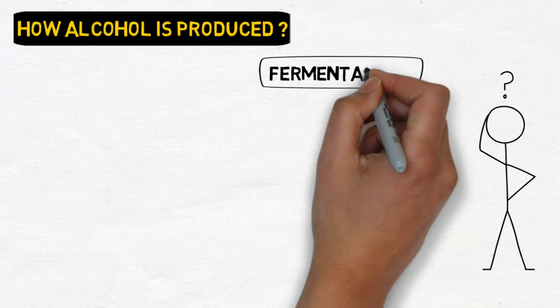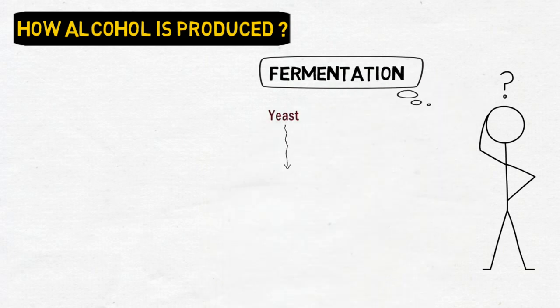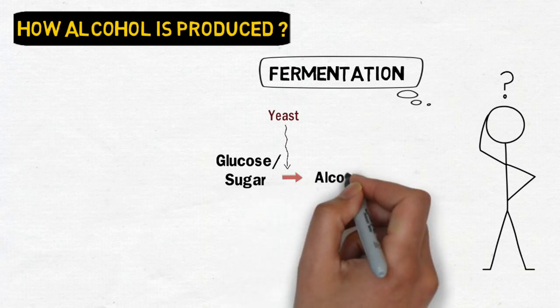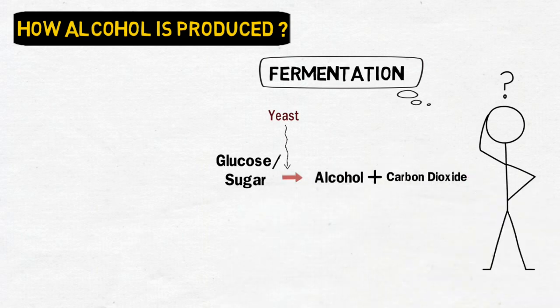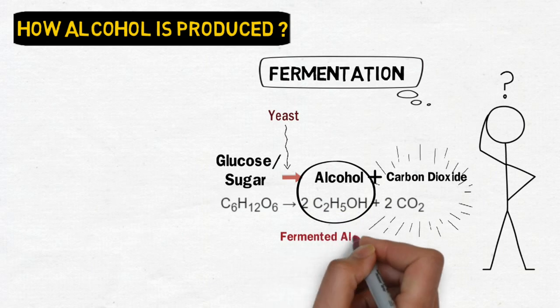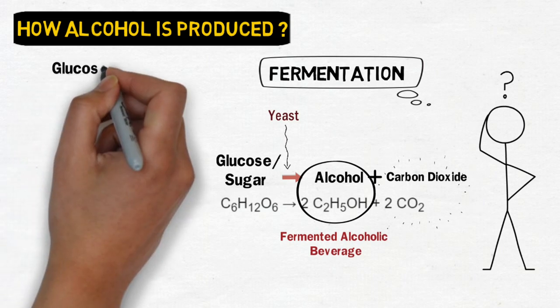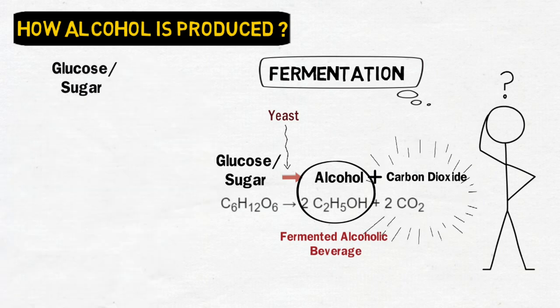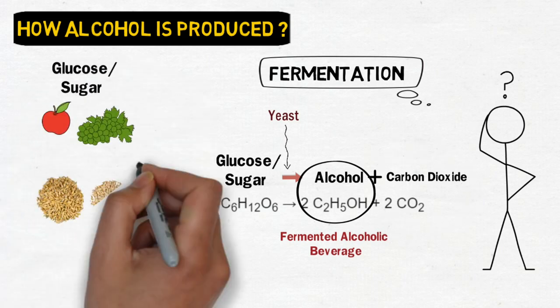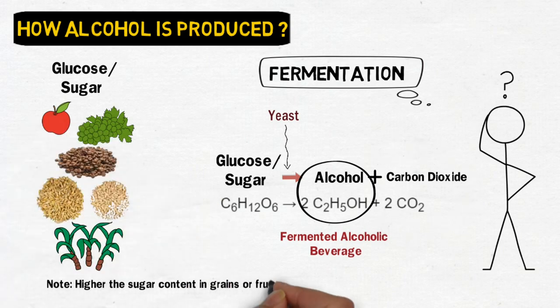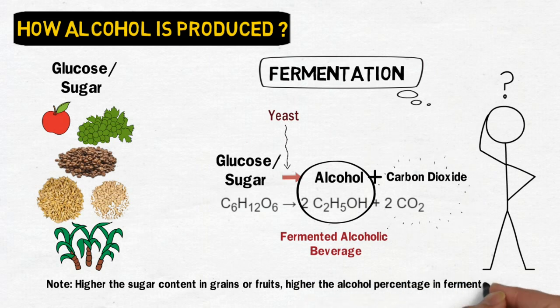Alcoholic beverages are produced through the process of fermentation. In fermentation, the action of yeast upon a sugar solution breaks down the sugar into alcohol and carbon dioxide. The carbon dioxide escapes into the air and we are left with a fermented beverage — that is what we call ethanol or ethyl alcohol. Sugar can be obtained from substances such as fruit, cereals, grains, molasses, or other plant extracts.